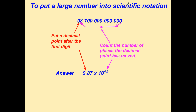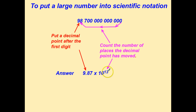Here's a very quick way of writing any large number in scientific notation. The first thing you do: take the decimal point, which was at the end of the number, and put it after the first digit. So that gives us 9.87 — the number between 1 and 10. Now, how far did we move that decimal point? We moved it 13 places. Therefore, it's 9.87 times 10 to the 13th. Effectively, we divided by 10 to the 13th, so we multiply by 10 to the 13th. Move the decimal point to make the first number between 1 and 10, count how many places you moved it, and that becomes the power.